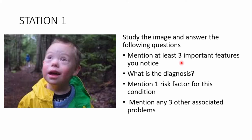Question 1: Study the image and answer the following questions. The first question is: mention at least 3 features you notice. The second question is: what is the diagnosis? The third question is: mention one risk factor for this condition. The fourth question is: mention any 3 other associated problems.